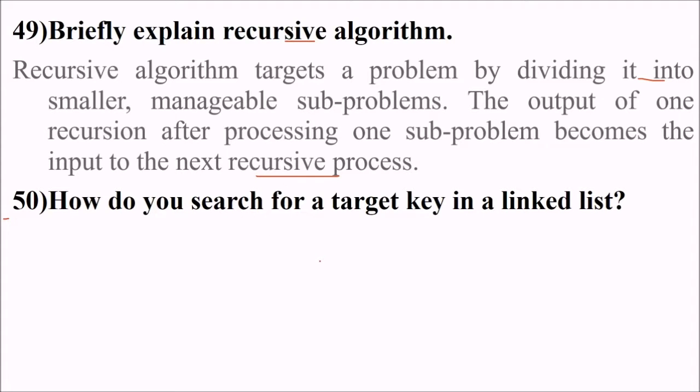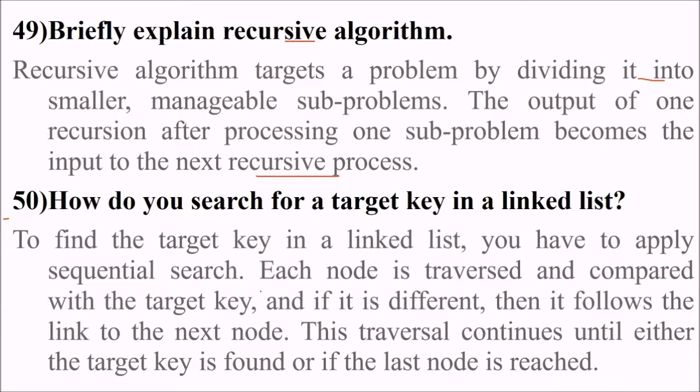50 is how do you search for a target key in a linked list? This will follow a sequential search only. To find a target key in a linked list, you have to apply sequential search. Each node needs to be traversed and compared with the target key. If it is different, then follow the link to the next node. This traversal will continue until the target key is found or if the last node is reached.